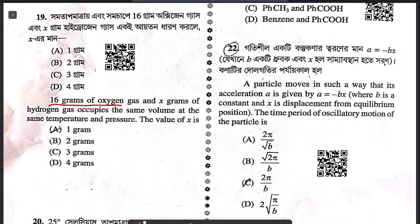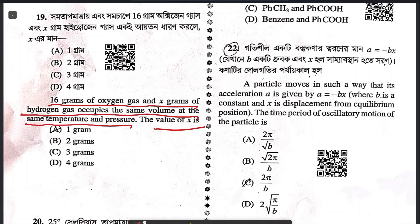Question 19: 16 grams of oxygen and x grams of hydrogen gas occupy the same volume — this is Avogadro's law — at the same temperature and pressure. The value of x: calculate the moles of oxygen and the moles of hydrogen, and you will get answer A.